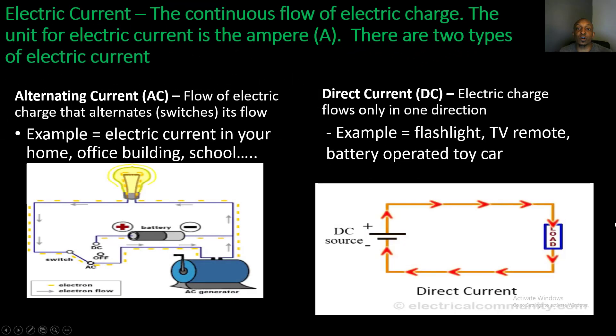First, let's start off with electric current, which is the continuous flow of electric charge. The unit for electric current is the ampere, and the symbol is A. There are two types of electric current.